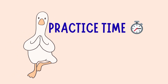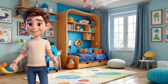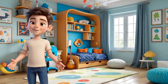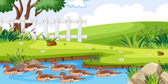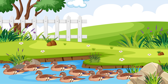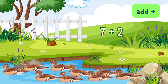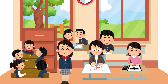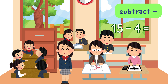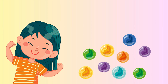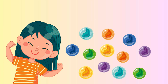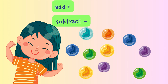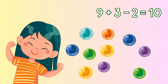Practice time — now it's your turn. There were 7 ducks in the pond, 2 more flew in. That's add: 7 plus 2 equals 9. 15 students were in class, 4 went to the library. That's subtract: 15 minus 4 equals 11. Ella had 9 marbles. She found 3 more, but then lost 2. That's add and subtract: 9 plus 3 minus 2 equals 10. Nice work!